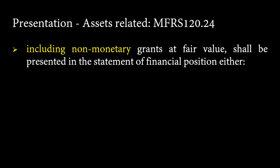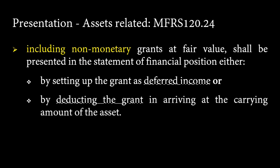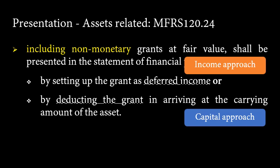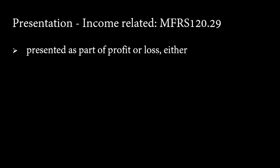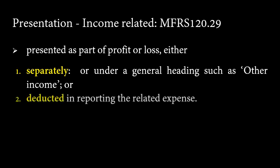For presentation of the grant, it depends on the type of grant — whether it is asset-related or income-related. For government grants related to assets including non-monetary grants at fair value, this shall be presented in the statement of financial position either by setting up the grant as deferred income, or by deducting the grant in arriving at the carrying amount of the asset. If we set the grant as deferred income, creating a deferred grant income account, this is based on the income approach. If we deduct the grant directly from the cost of the asset, this is based on the capital approach. For government grants related to income, they are presented as part of profit or loss either separately or under a general heading such as other income, or alternatively we could deduct it directly from the related expense, thus reducing the amount of that expense.